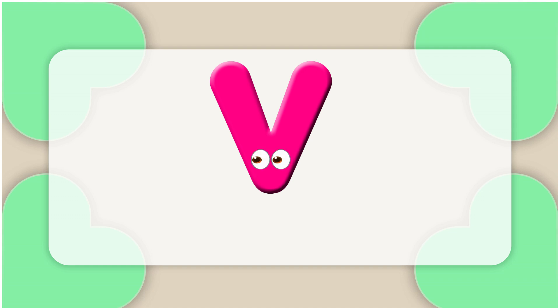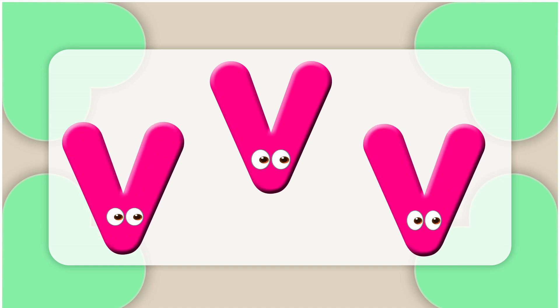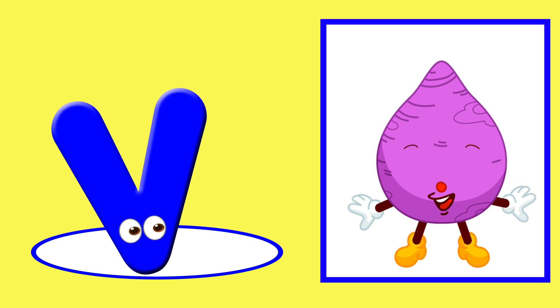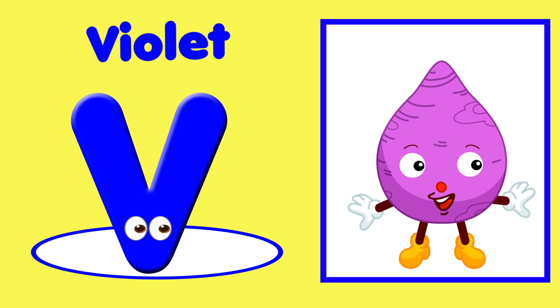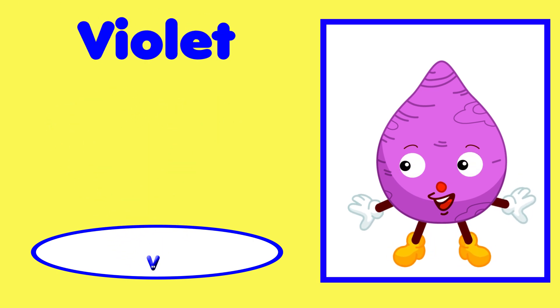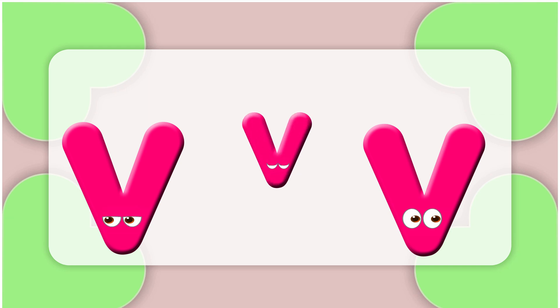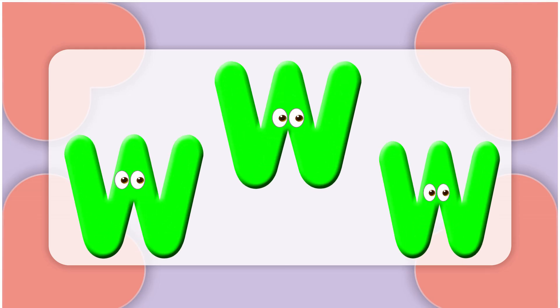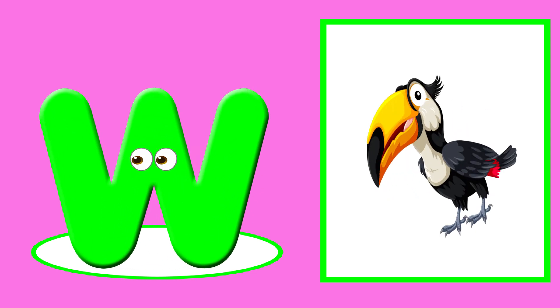This is the letter V. V is for violet — w, w, violet. V is for vulture — w, w.